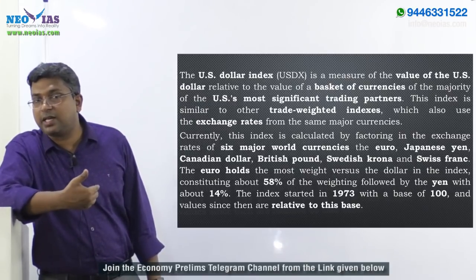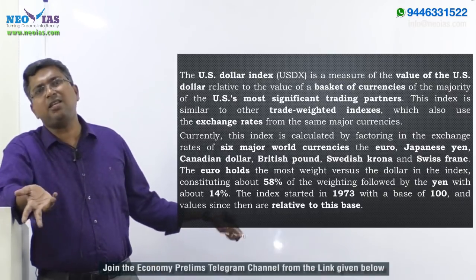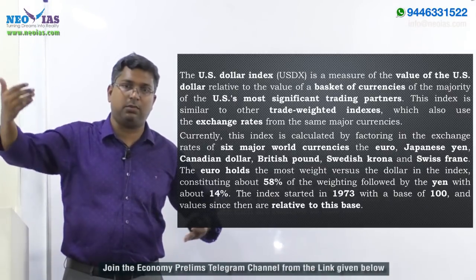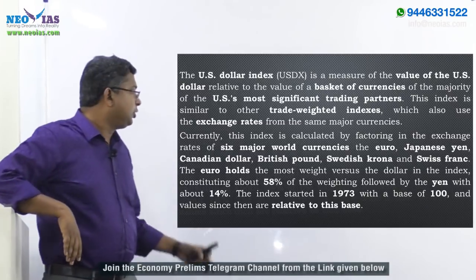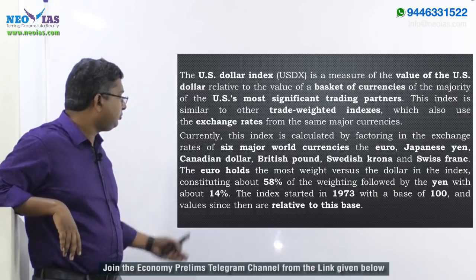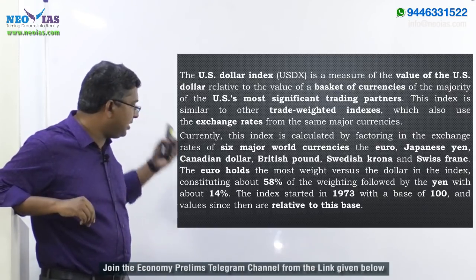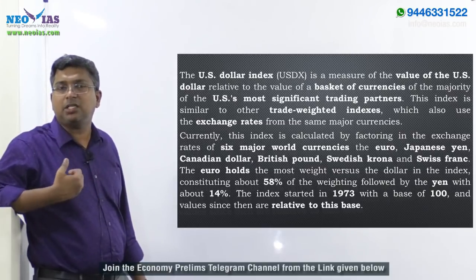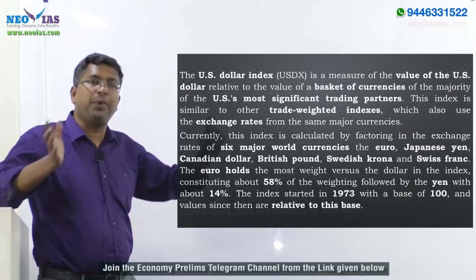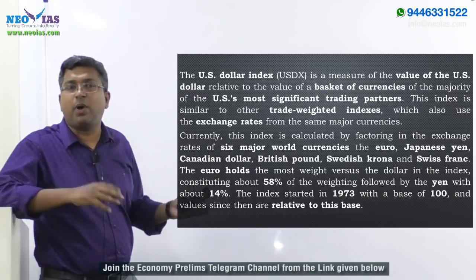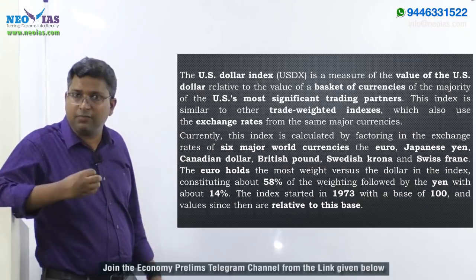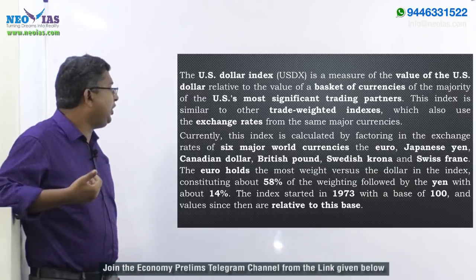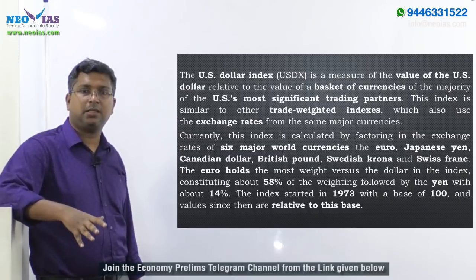Note which major currency is missing: the Chinese yuan is not there, and similarly the Indian rupee is also not included, because China is a much larger trading partner than India in relation to the US. This index was created in 1973. Since it is an index, each currency is given a weightage. The euro has the largest weightage — 58% — because the eurozone is the largest trading partner of the US, followed by the Japanese yen at 14%.